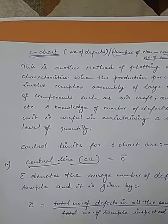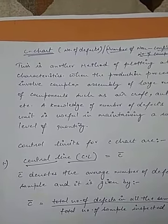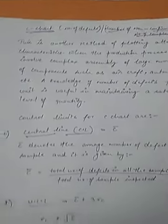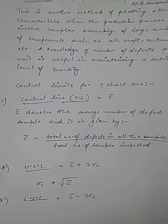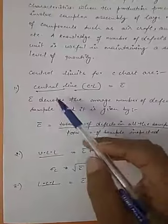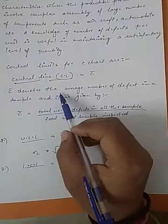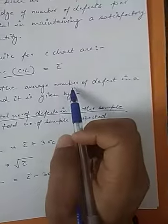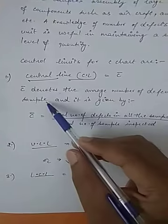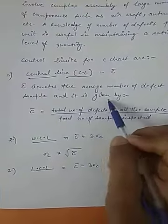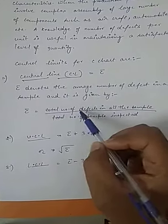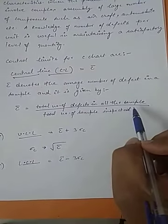Now we will discuss control limits for C-chart. First, the central limit line is equal to C-bar, where C-bar denotes the average number of defects in a sample, and it is given by C-bar equals total number of defects in all samples.